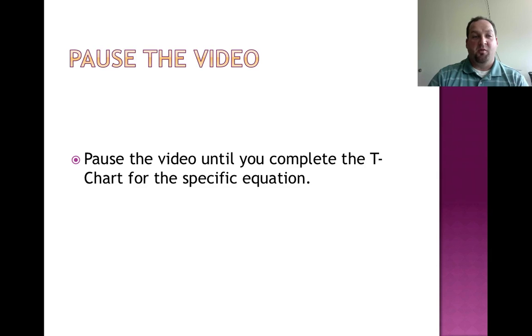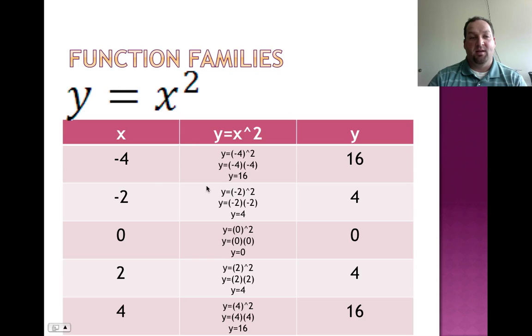You got your t chart finished for Y equals X squared. Let's take a look and see if you got the same answer as I did. Check to see if you got the same thing. Plug in a negative 4, get out a 16. We did that one together. Negative 2, get out a 4. 0, get out a 0. Put in a 2, get out a 4. Put in a 4, get out a 16. What you should notice is that every range value here is positive. And the reason for that is that you're squaring. And when you square a negative, a negative times a negative is a positive. And then a positive times a positive is also a positive. So it does not matter if you plug in a positive or a negative X value. You always get out a positive Y value.